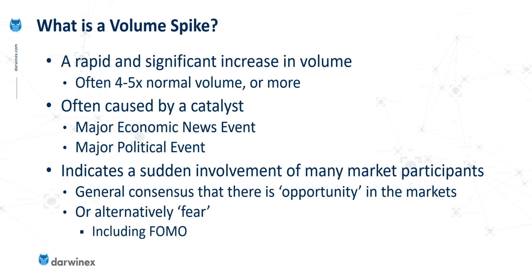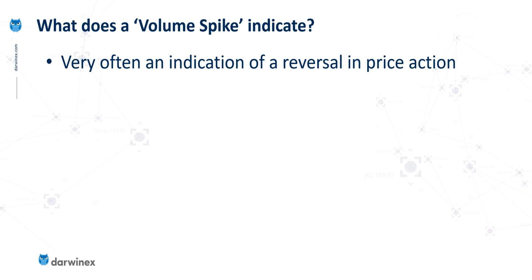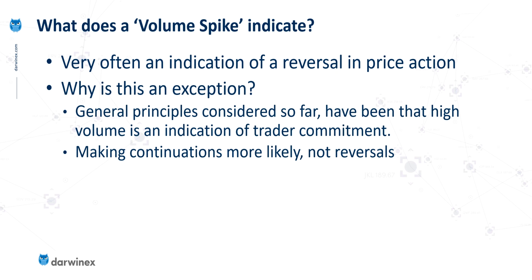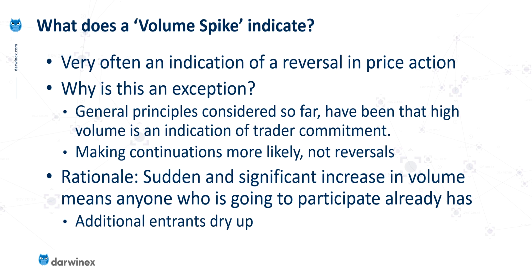So how can we use this information to our advantage? Very often, a volume spike is an indication that there is an imminent reversal in the price action. It's worth mentioning why I consider volume spikes to be an exception to the general principles of volume analysis. Usually, high volume is an indication of trader commitment to a price move, and because of those high levels of trader commitment, the probabilities have turned in favour of a continuation of that price move — not a reversal. Whereas with a volume spike, despite the certainly high levels of volume, these often produce a reversal, which is the opposite of the normal principles — hence why it's an exception.